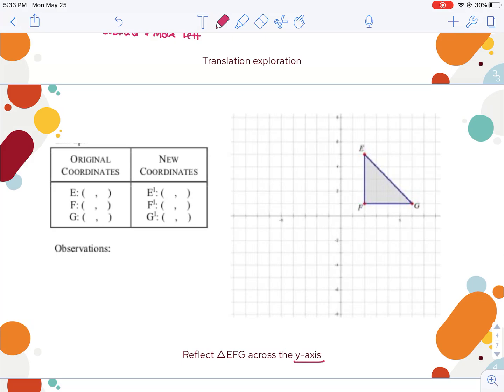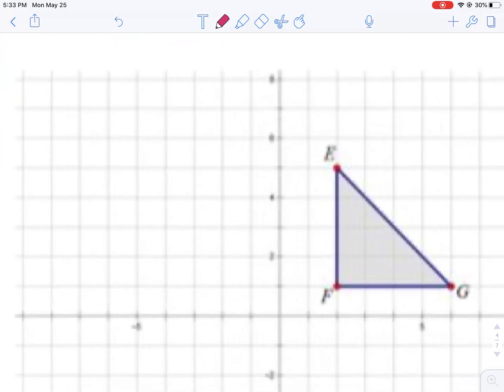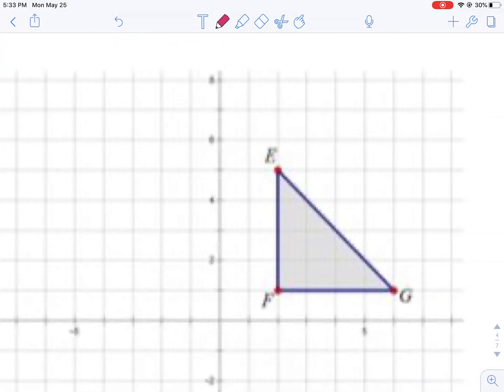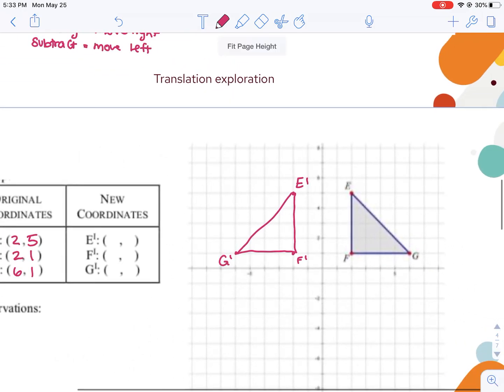This time we're going to reflect across the Y axis. I'm going to fill my points in again. So this time E is at 2, 5. F is at 2, 1, and G is at 6, 1. I'm going to go ahead and reflect that. So if I were to fold across the Y axis, E prime lands right here, F prime lands there, and G prime is another 4 units from that. I'm going to fill in where E prime, F prime, and G prime landed, and then see if I can figure out a rule for when I reflect across the Y axis.